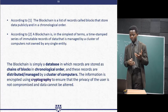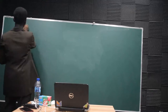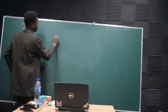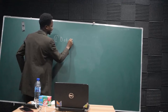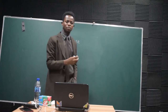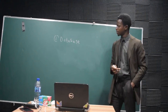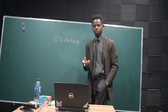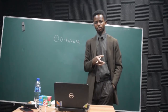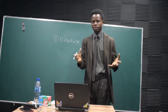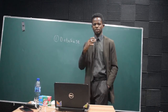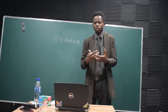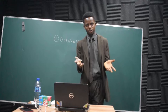I want you to pay attention to the words I highlighted. The first highlighted word is 'database.' The blockchain is simply a database. So what do we mean by a database? A database is, in simple terms, a record or collection of data in such a way that this data can be easily accessed, retrieved, and manipulated.